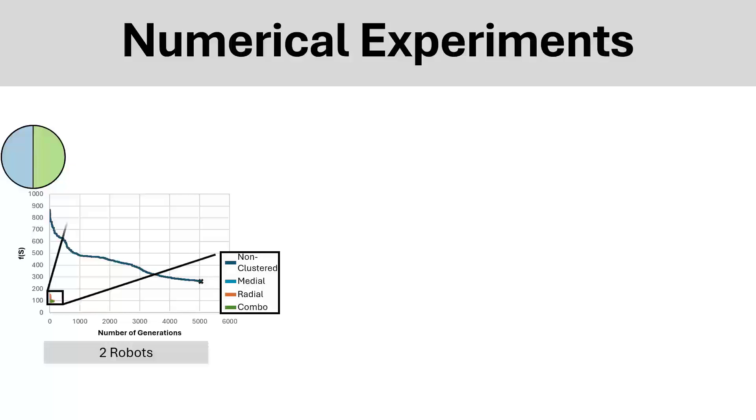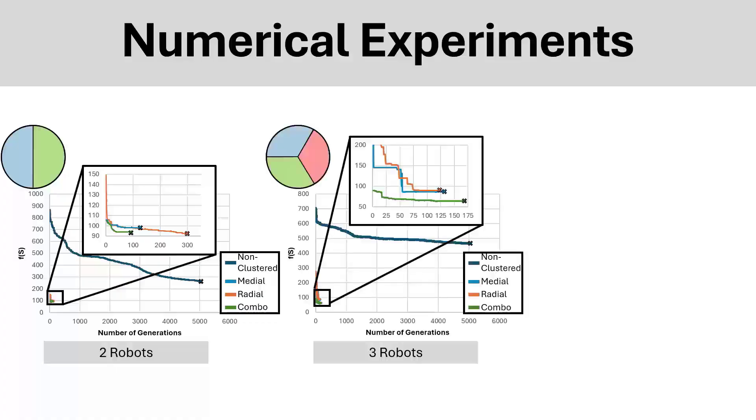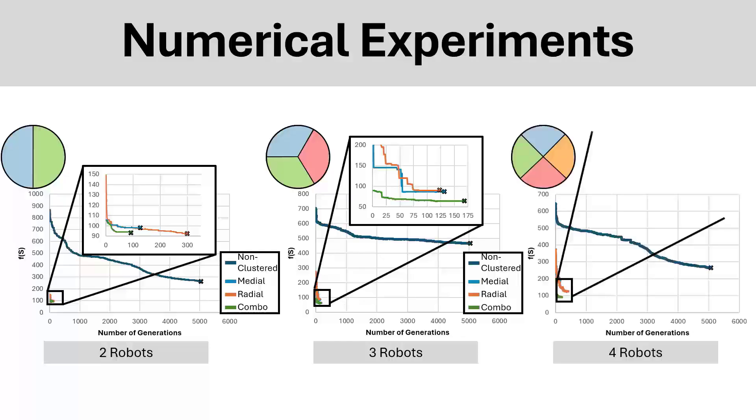We can then use this objective function to optimize the printing with two robots, where we can see that a combination of medial and radial performs much better than a non-clustered approach. We can then do the same thing with three robots, where we see that the combination medial-radial parameterization allows for a much better optimal and a lot fewer generations. The same can be seen in a four-robot case, where the combination approach provides a much better optimal than just radial, just medial, or a non-clustered approach.